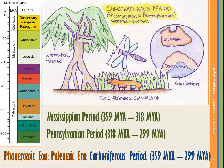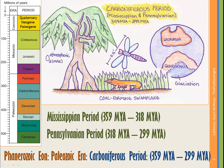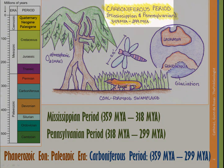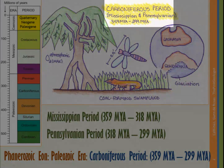Next, we're going to talk about the Carboniferous period, which is divided into the Mississippian and the Pennsylvanian periods. In some usage you'll see Carboniferous, which includes both; in other usage you'll see them separated. The Carboniferous lasted from 359 million years ago to 299 million years ago — the Mississippian from 359 to 318 Ma, and the Pennsylvanian from 318 to 299 Ma.